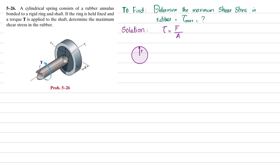The torque T is applied, which is clockwise. This torque T is equal to force times radius, so the force will be perpendicular to this radius. Therefore, torque T equals F times r, which gives us F equals T over r.